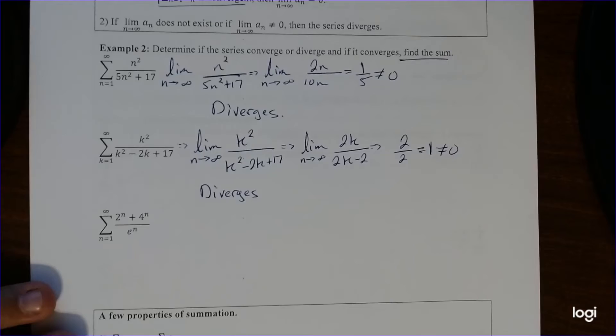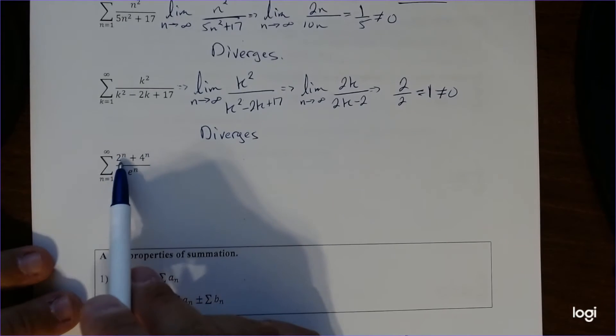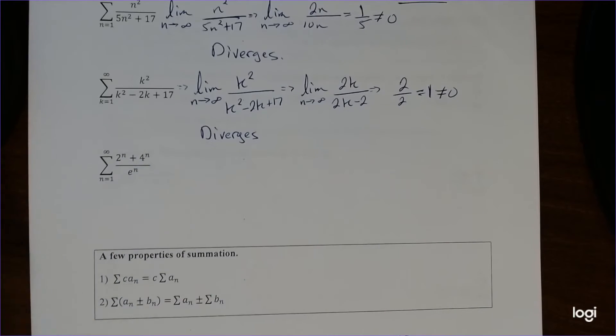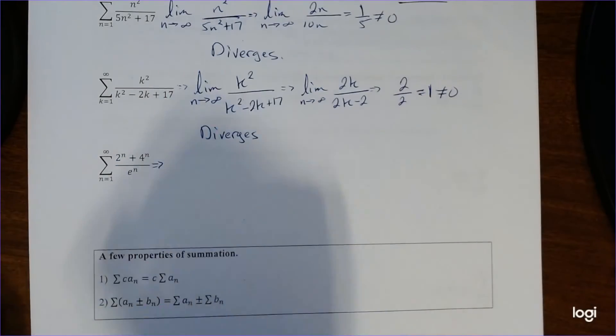So 2 for divergency, okay, and then hopefully you noticed, okay, if something is raised to n power, so we may be using our geometric series to help us out here, and it's exactly what we're going to be doing.